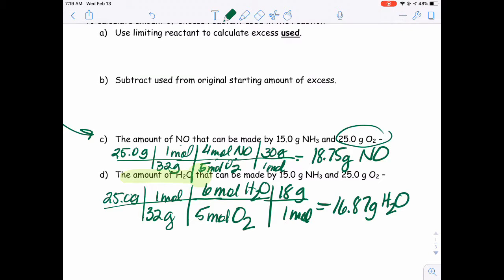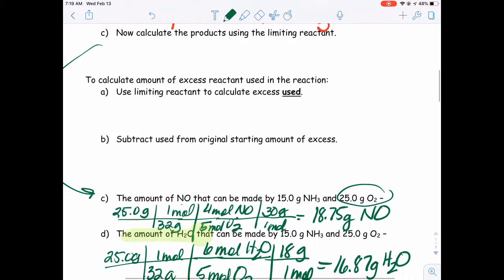That is how much 15 grams of ammonia and 25 grams of oxygen will make. Now, the last thing on here asks us about excess. If oxygen is the limiting, that means we're going to have leftover ammonia. Just like if we're making s'mores and our marshmallows limit our s'mores, we should have leftover candy bars and leftover graham crackers.